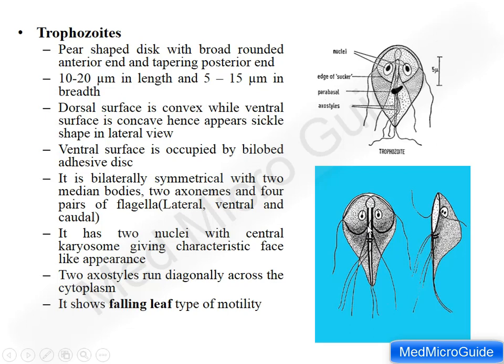Through this disc the parasite attaches to the intestinal mucosa. The parasite is bilaterally symmetrical with two median bodies, two axonemes, and four pairs of flagella. It has two nuclei with a central karyosome, giving a characteristic face-like appearance to the parasite. Two axostyles run diagonally across the cytoplasm, and the presence of four pairs of flagella gives a characteristic falling leaf motility to the parasite.